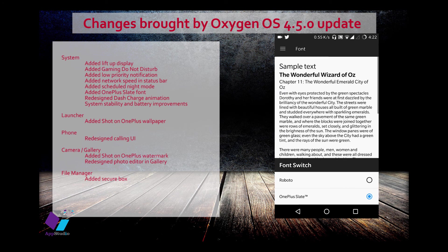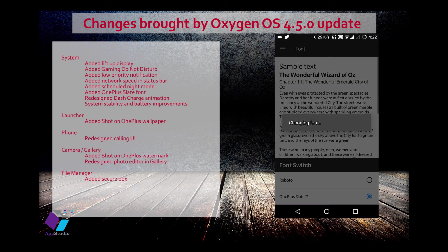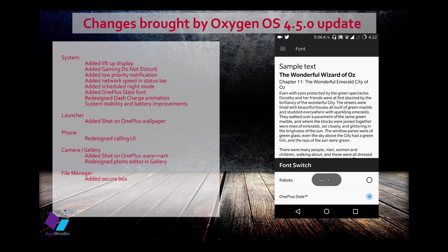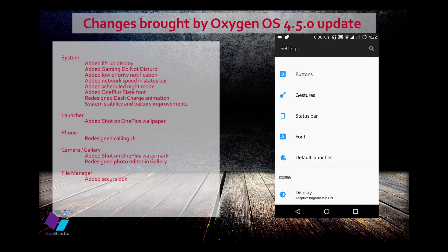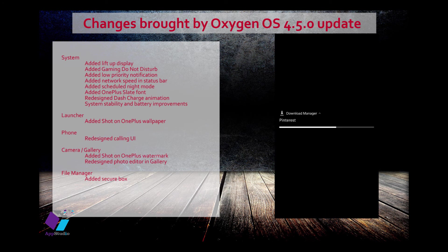In the font settings, you can see a new stylish font. Initially it looks like the default Roboto, but the OnePlus font is a new style. The next feature I'm going to show is the dash charger animation — when you plug in your dash charger, you'll see a small animation. I'm turning off my screen and plugging in now.